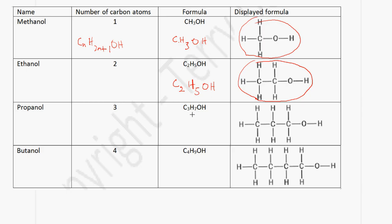In the case of propanol, we have three carbon atoms. So it will be C3H7OH — using 2×3+1=7 — and this represents the displayed formula for propanol.